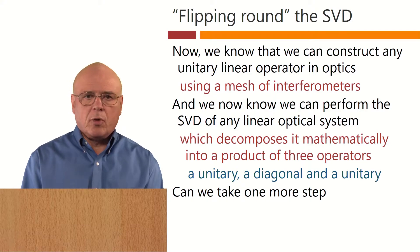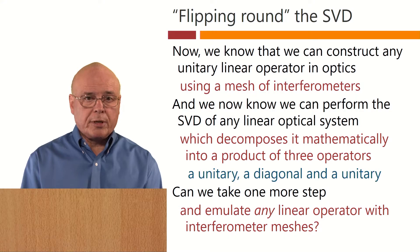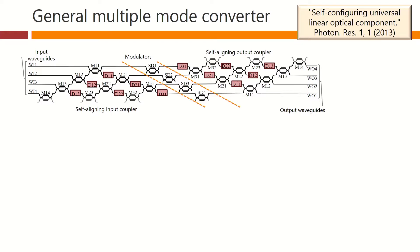Can we take one more step and emulate any linear operator with interferometer meshes? Well, here is the architecture that we think can do this. First of all, here we have a kind of mesh of interferometers we've already seen. It can take any four inputs here, orthogonal input vectors, and line them up to come out in single waveguides.